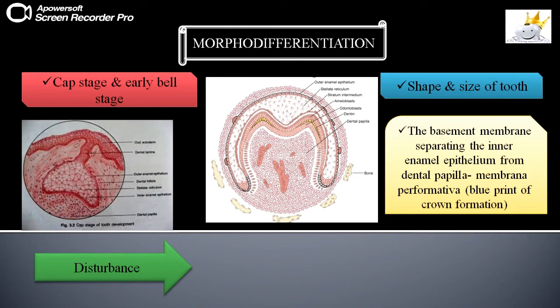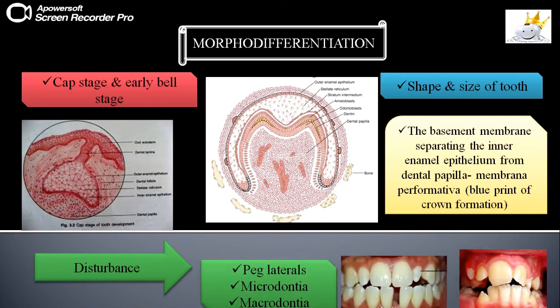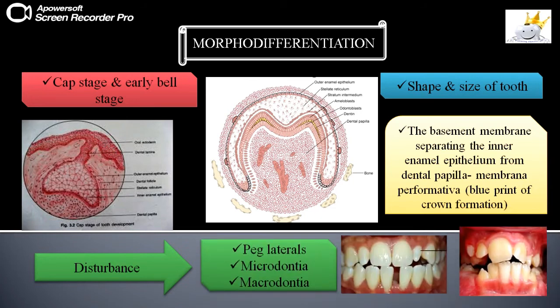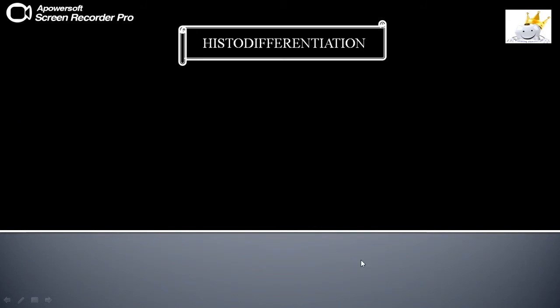When you read the term abnormal form and size of the teeth, you can recall conditions like peg laterals, and microdontia and macrodontia of incisors. Macrodontia means the crown will be larger in size, while microdontia means the crown will be shorter in size.